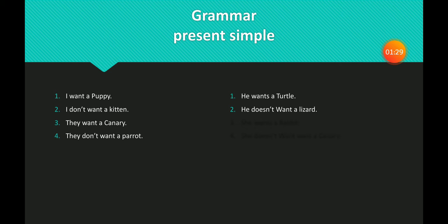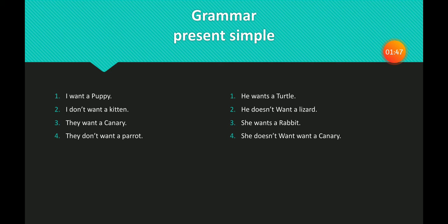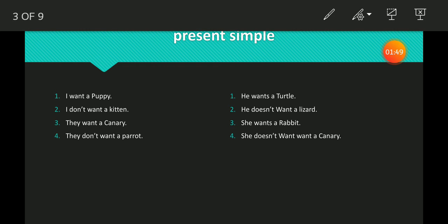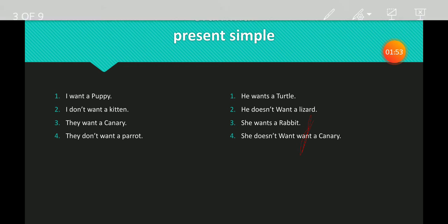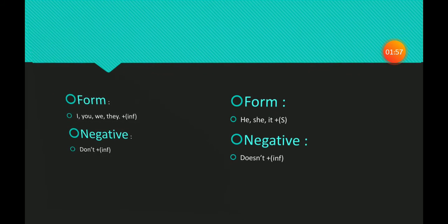A present simple with he, she, or it — negative of 'want' uses 'doesn't' plus infinitive. He doesn't want a lizard. She wants a rabbit. She doesn't want a canary.